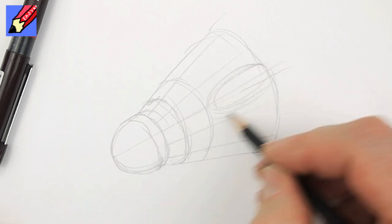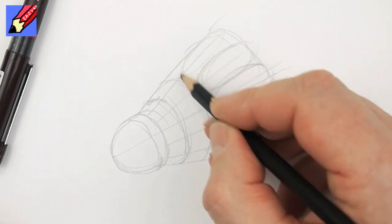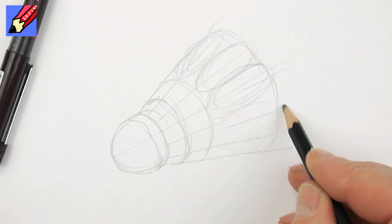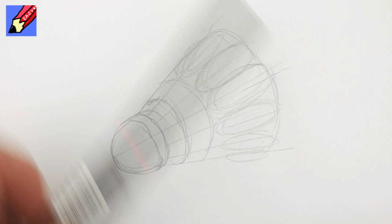And then each of those stalks, what are they called? Each feather is going to have a kind of feathery bit on the end like that.